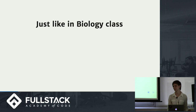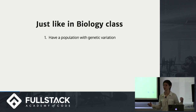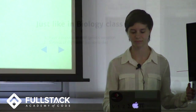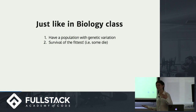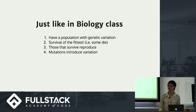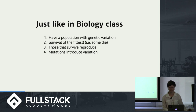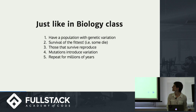We need to understand how natural selection works, which is what genetic algorithms mimic. If you remember from your ninth grade biology class, you have a population of individuals and their genetic code has variation — different hair color, different eye color, heights. Some of these individuals die, and some survive and get to reproduce. You also have mutations that introduce more variation, which is very important. For evolution, this repeats for millions and millions of years and is still going.